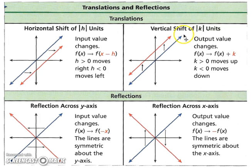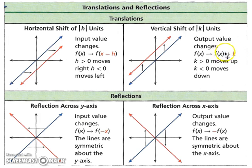A vertical shift deals with the output value changes. Because the output value is what changes, not the x value or input value, it's going to be on the outside. You're taking the whole function and adding k to move it up and down. If k is positive it goes up; if it's negative it moves down.